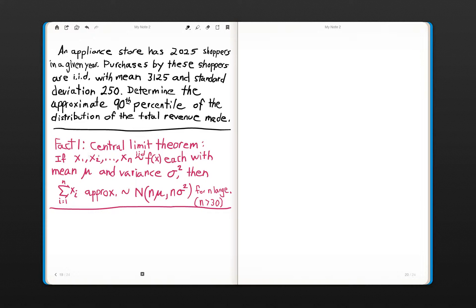If we have n independent and identically distributed realizations from some density f, each with mean μ and variance σ², then if you sum them up, those are approximately normally distributed with mean n times μ and variance n times σ². The mean should just be n times μ, and if they're independent, you can sum up the variances, so the variance of this sum is n times σ².